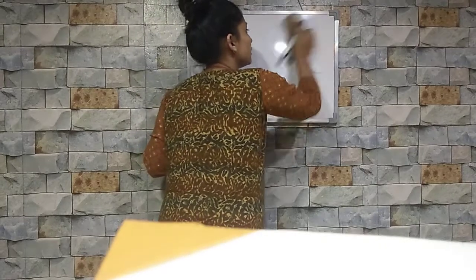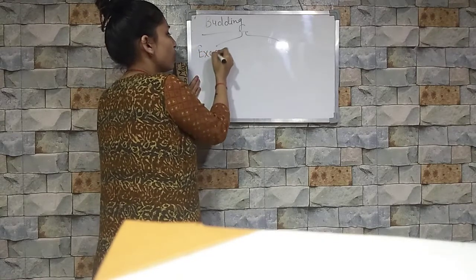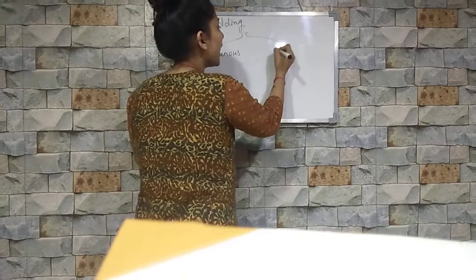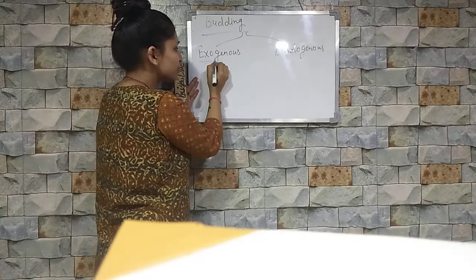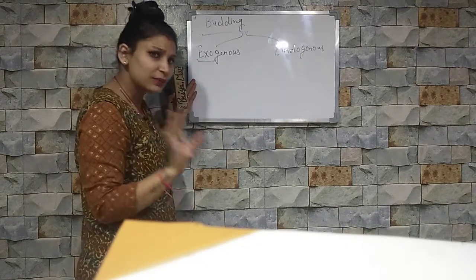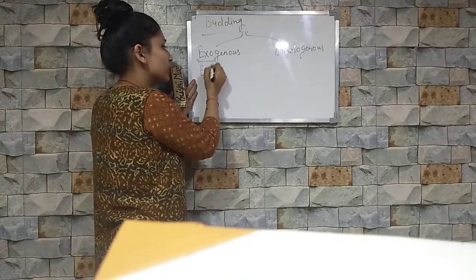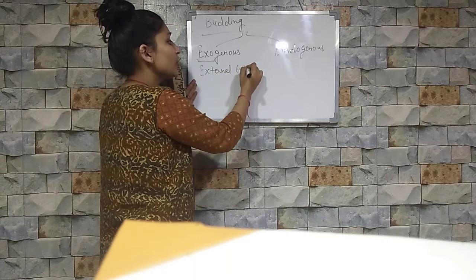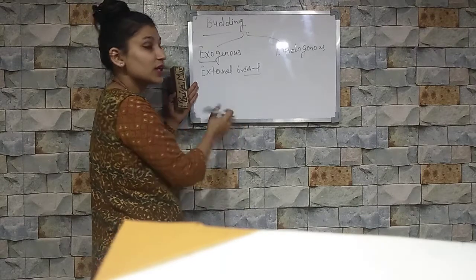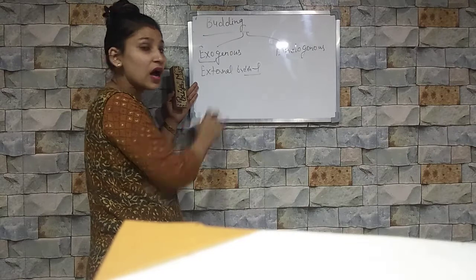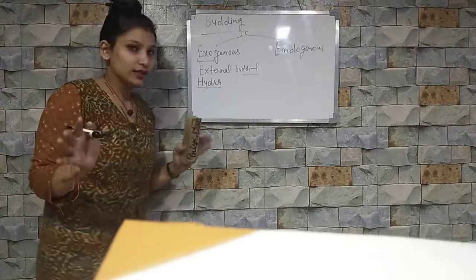The body type is 2 types. The first type is exogenous and the second type is endogenous. Exo means outside, so exogenous means external budding. Why do we say external budding? Because the bud is externally developed on the parent body. Examples of exogenous budding are yeast and hydra.